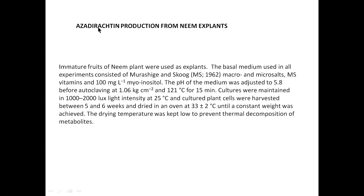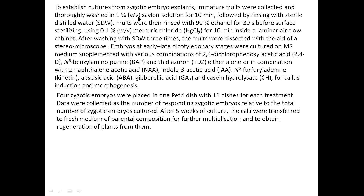Another insecticide is azadirachtin. For this, immature fruits of neem plants were used. The basic medium is MS medium supplemented with myo-inositol at 100 mg per liter as a macronutrient, with pH adjusted to 5.8 before autoclaving. Cultures were maintained at a particular light intensity at 25°C, and then plant cells were harvested, dried, and measured for the amount of azadirachtin. Cultures from zygotic embryos were also used.